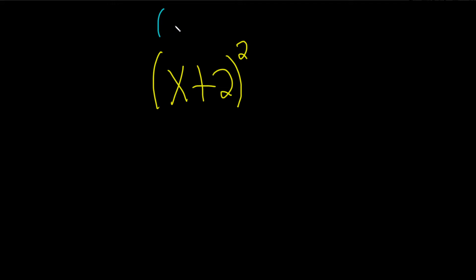So if you have A plus B, and you square it, think of A as the first one and B as the second one. So you square the first one, you square the A, you multiply these and you double it, so it's 2AB.